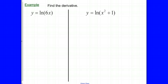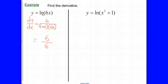Let's do some examples. To find the derivative of Y with respect to X, we have the natural log of 6X. Using that one formula, we take the derivative of the function we're taking the logarithm of — the derivative of 6X is 6, which goes in the numerator. This is a natural log, base E, so the natural log of E is 1. Multiply by the function 6X. This gives us 6 over 1 times 6X, and the common factors of 6 cancel, leaving 1 over X as our derivative.